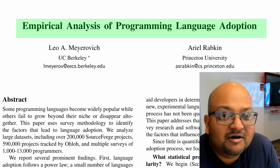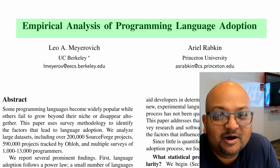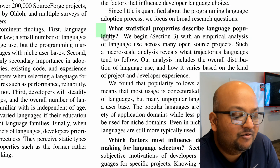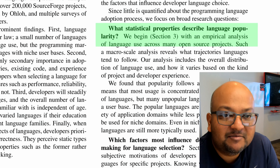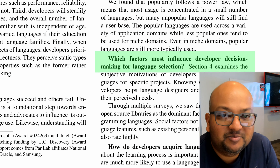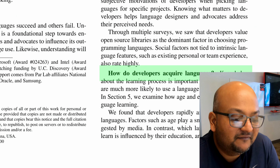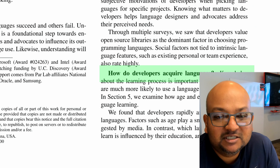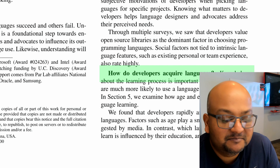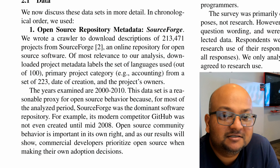They look at programmers out in the field and get answers to some of these questions: what properties describe popularity, which factors do developers give importance to when picking a programming language, and how do developers acquire languages across their career? The authors use several data sources to look at these questions.